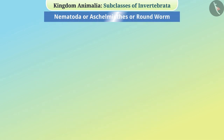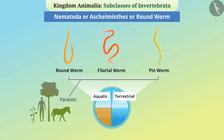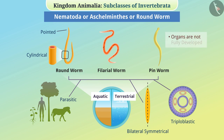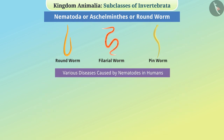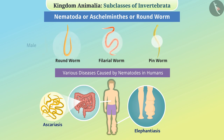Nematoda or Roundworms: These include roundworm, filarial worm, pinworm, etc. They are free living, aquatic, terrestrial and also parasitic in plants and animals. They are bilaterally symmetrical, triploblastic animals whose bodies are cylindrical with a pointed tail end. Tissues are found in them but organs are not fully developed. Their body cavity is called pseudocoelom. Various diseases caused by nematodes in humans include Elephantiasis and Ascariasis. Among them, males and females are different, with females being larger than males.